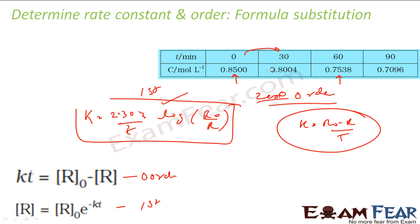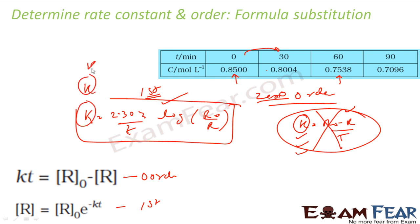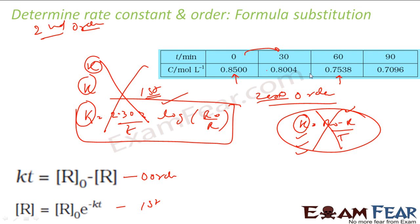We assume the equation to be zero-order, try to fit in the experimental values, and find values of k for different sets of results. If the value of k is consistent, we say it is a zero-order equation. If it is not consistent, we assume the equation to be first-order, fit in the experimental data, and find different values of k. If k is consistent, we say it is a first-order reaction. If not, we assume it is second-order, write the formula, fit in the experimental data, find different values of k, and if all values of k are consistent, we say it is a second-order equation.